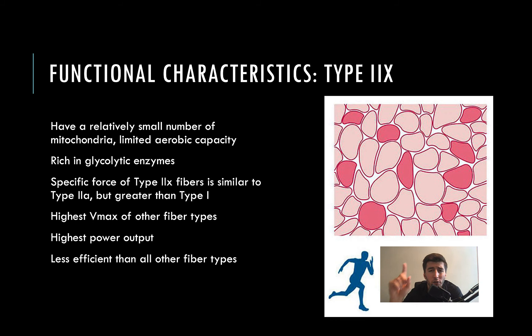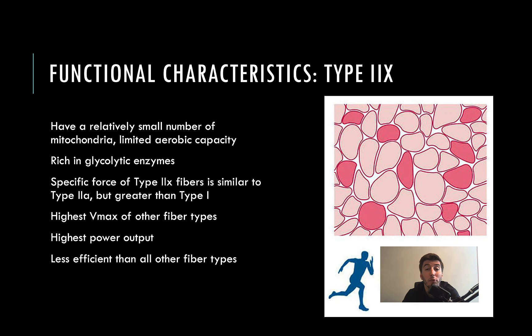Type 2X fibers have a small number of mitochondria and limited aerobic capacity — these are the white fibers. They're not highly aerobically capable; they're more anaerobic and rich in glycolytic enzymes because we want to turn over energy fast. The specific force of Type 2X is fairly similar to Type 2A. Type 2X has the highest velocity of shortening, the most power output, but it's not very efficient — so we're going to burn through fuel to get there.